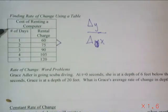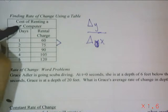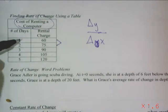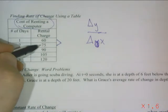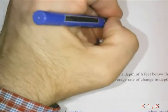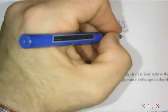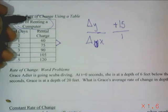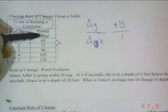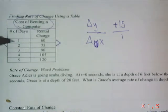If we're seeing the rate of change for renting a computer, we're going to see how far it is from 60 to 75. If you're going from 60 to 75, it's 15 plus 15. If I go from 1 to 2, the distance is just 1. I have a rate of change of the rental charge of $15 per day.